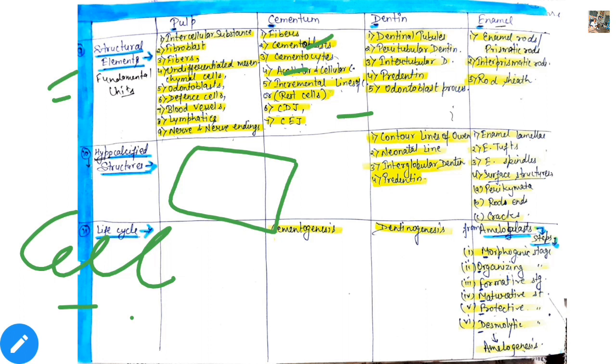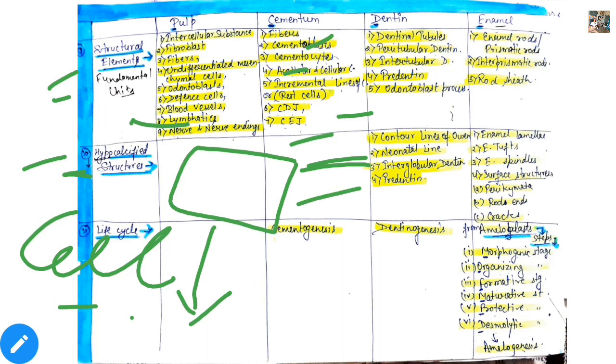Here I am summarizing the whole chapter so that you can continue reading this topic. Here we come to hypocalcified structures. What is the meaning of hypocalcified? Hypo means low, calcified means calcification or mineralization. So which area has less calcification? Those are the hypocalcified structures of dentine — the contour lines of Owen, neonatal line, interglobular dentine and pre-dentine. These four are hypocalcified structures.